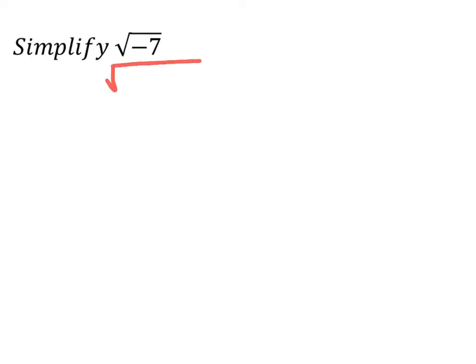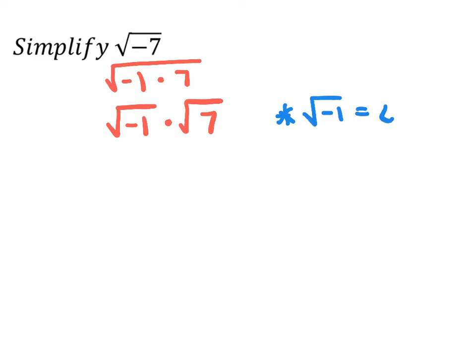In our first example, we simplify the square root of negative 7. We rewrite this as the square root of negative 1 times 7, which splits into the square root of negative 1 times the square root of 7. From our definition, the square root of negative 1 equals i, so we rewrite the expression as i√7. Since √7 does not simplify any further, i√7 is our final answer.